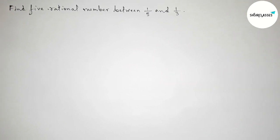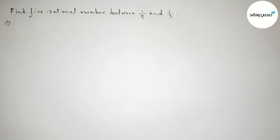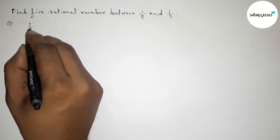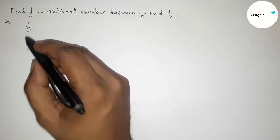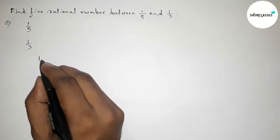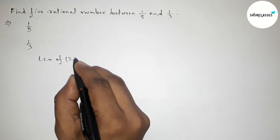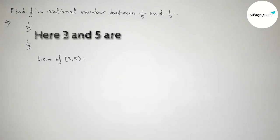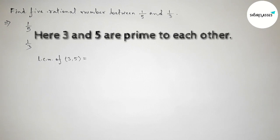First, let us solve this problem. Here, the given two rational numbers are 1/5 and 1/3. The denominators are not equal, so we have to make equal denominators. First, we find the LCM of 3 and 5.